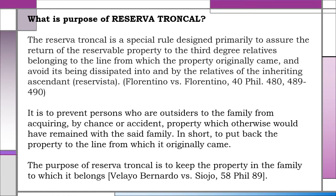Reserva Troncal is provided for under Article 891. The purpose of Reserva Troncal is a special rule designed primarily to assure the return of the reservable property to the third degree relatives belonging to the line from which the property originally came, and to avoid its being dissipated by the relatives of the inheriting ascendant or Reservista. It is to prevent outsiders to the family from acquiring, by chance or accident, property which otherwise would have remained with the same family. In short, to put back the property to the line from which it originally came and to keep the property in the family to which it belongs.